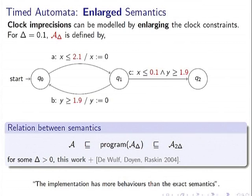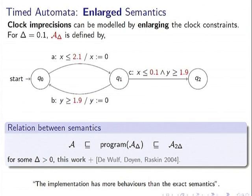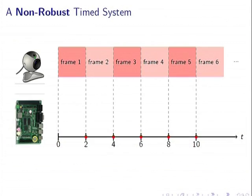There is a relation between the two semantics. For any timed automaton A, all behaviors of A are included in the program semantics. If you enlarge all guards by δ, you get this inclusion — which is actually a timed simulation, not just trace inclusion. If you enlarge even more, the program semantics is included in the enlarged automaton. This means the real-world behavior can have extra behavior beyond the abstract model A, and the enlargement is an over-approximation of the program semantics.